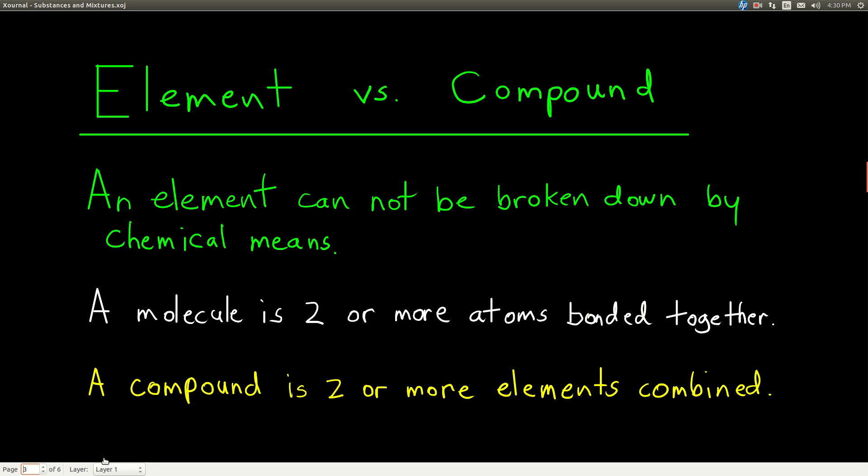So let's look at elements versus compounds. An element is something that cannot be broken down any further by chemical means and still have the same properties. The periodic table lists all of the known elements in the universe.